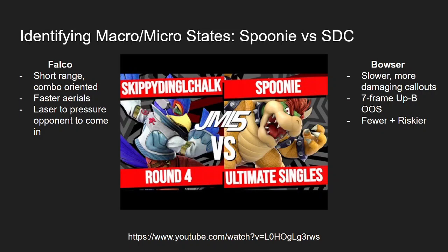Now the roles are a bit more different. We have Falco, who has a really strong combo game and good combo starters such as grab. He's still quite short range, but he has another key pressure tool — the laser — which makes you forced to either keep on jumping away to avoid it or try and approach to make him stop. Spoonie on Bowser on the other hand is slower, more damaging on callouts. It's going to be hard for him to get in, but once he's in, he's got choices of grab, side-B, any tilts, anything safe on shield, even the harder reads of f-smash, down-smash, and up-smash.